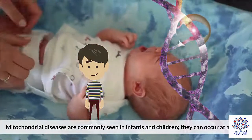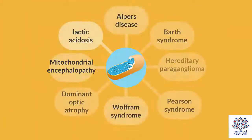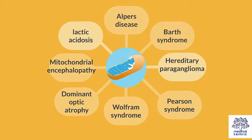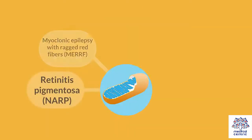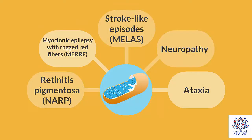They can occur at any age. Types of mitochondrial diseases include Alper's disease, Barth syndrome, hereditary paraganglioma, Pearson syndrome, Wolfram syndrome, dominant optic atrophy, mitochondrial encephalopathy lactic acidosis and stroke-like episodes (MELAS), neuropathy ataxia and retinitis pigmentosa (NARP), and myoclonic epilepsy with ragged red fibers (MERRF).